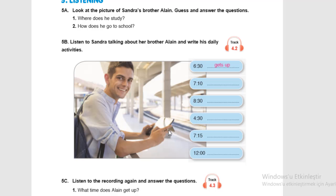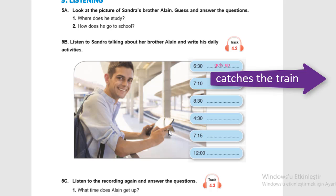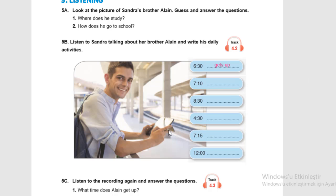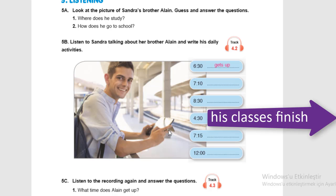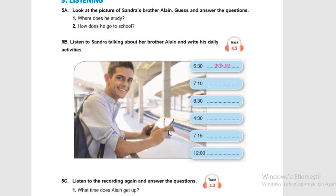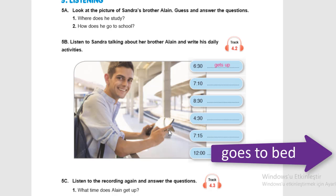Now I want you to check your answers. At 7:10, or ten past seven, he catches the train. At half past eight, 8:30, his classes start. And at half past four, his classes finish. At quarter past seven, he comes back home. At twelve o'clock, he goes to bed.